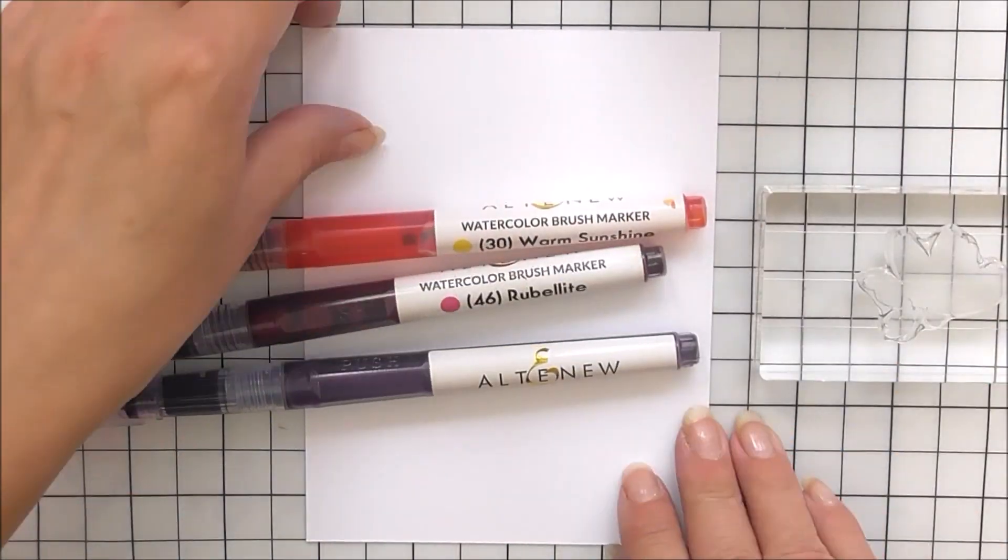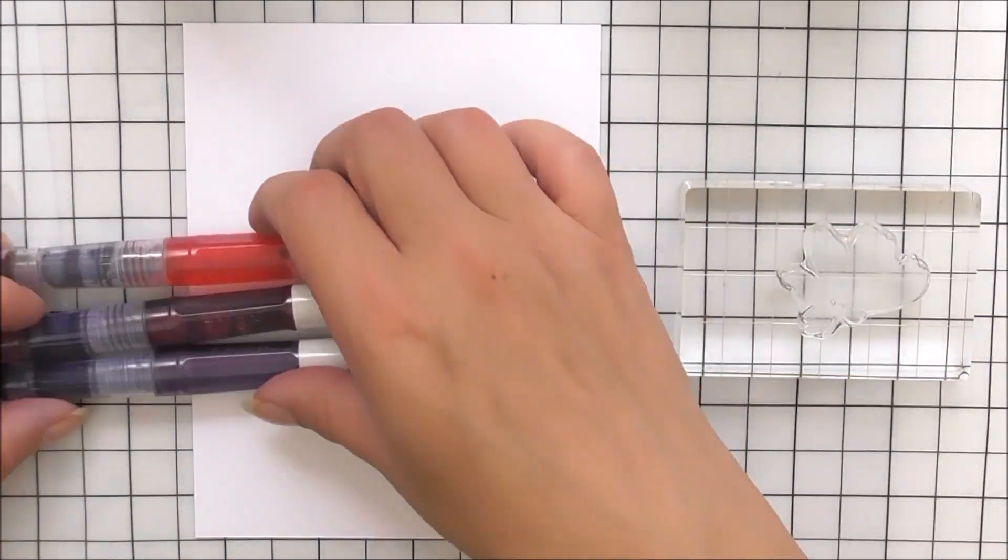The colors I'm using from the markers are Warm Sunshine, Rubelite, and also some Deep Iris—midnight violet, sorry—as well.